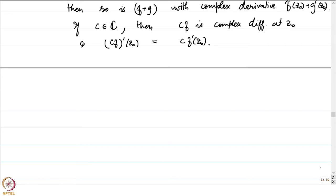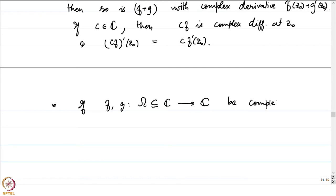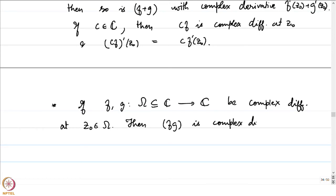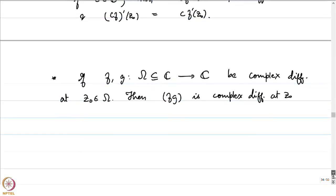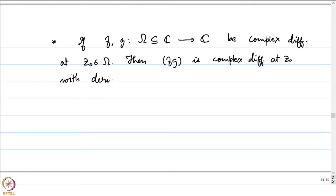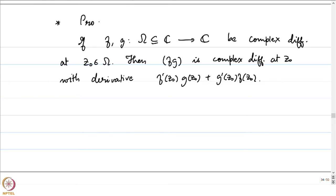Not just linearity — the product rule also holds. If f and g: Ω → ℂ are complex differentiable at z₀ ∈ Ω, then f·g is complex differentiable at z₀ with derivative f′(z₀)·g(z₀) + g′(z₀)·f(z₀), the usual Leibniz rule — the product rule.